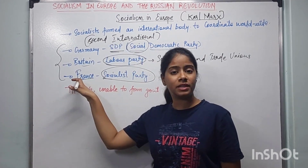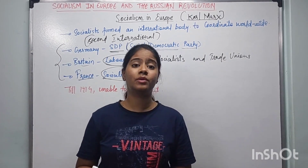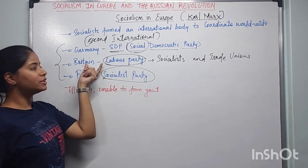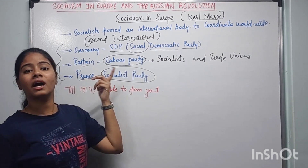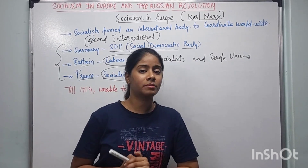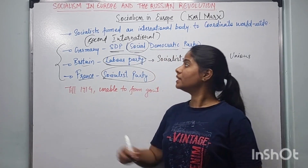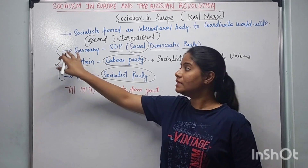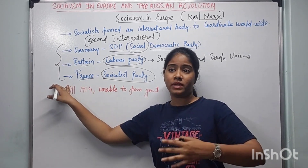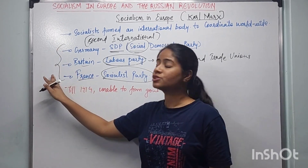France is the country we have read the whole story about in the French Revolution. Germany is the country we will study when we cover Nazism and Hitler. And Britain is where the Industrial Revolution began, making it one of the world's most important countries. These three main countries are supporting socialism and making their political appearance through political parties.